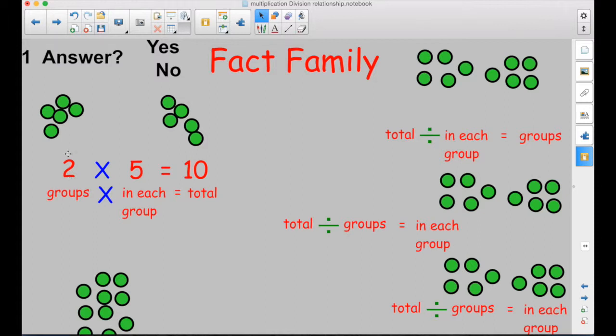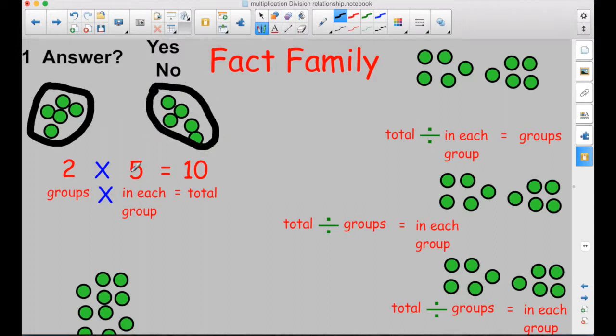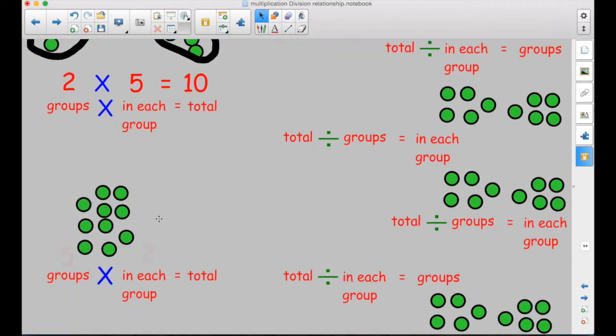Do you see the difference? Two groups. Five in each group. One, two, three, four, five. One, two, three, four, five. And then move on to the next one.